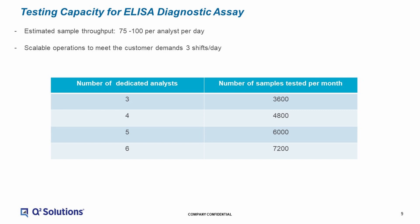Q-Squared Solutions is located on a scientific campus with the infrastructure to permit a fully scalable operation, where we can staff three shifts per day. An individual analyst can analyze 100 samples per day. We can scale up to six analysts, doing as many as 3,600 samples per month. We can clearly go to more analysts and higher throughput to meet the specific needs of your clinical trial.